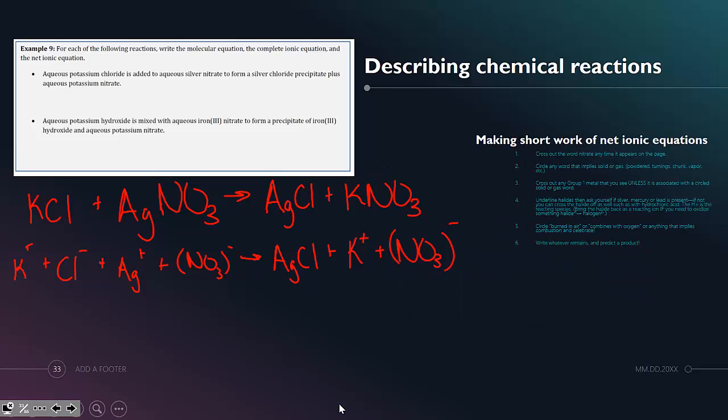To write the net ionic equation, we will remove the spectator ions. Remember, spectator ions are things that are the same in the reactants and the products. The potassium cation remains soluble and therefore is a spectator. And same with nitrate. Nitrate is a spectator ion here, it's the same in the reactants and products.